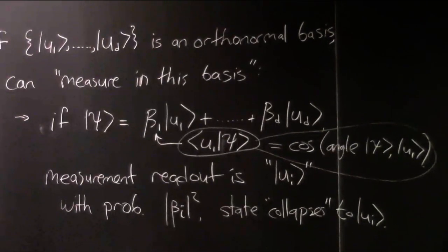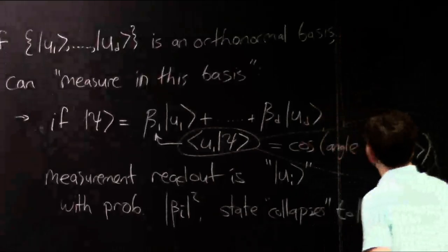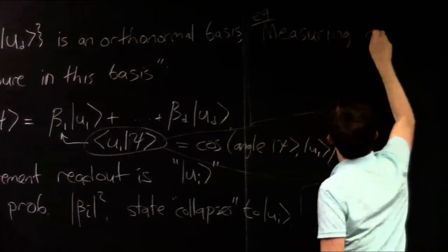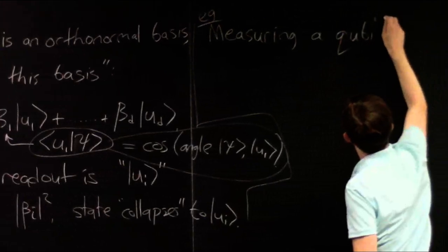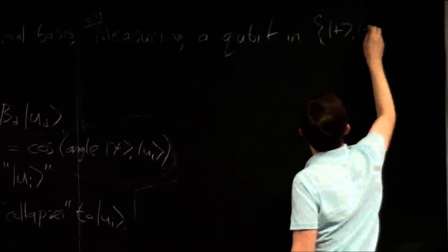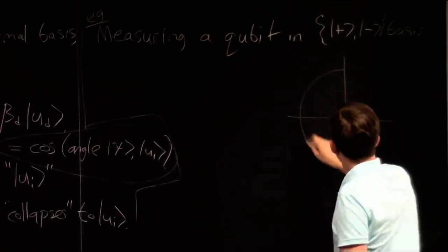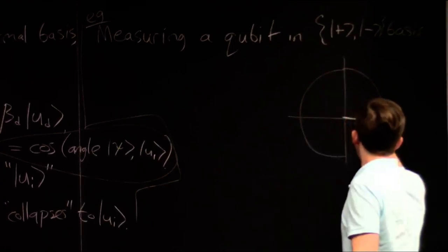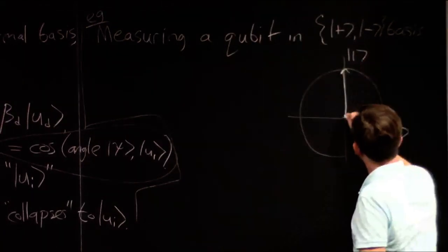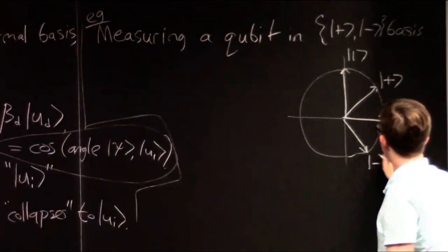Let's do an example. The simplest example is qubits. Our favorite example of an orthonormal basis which is not the standard one — 0 and 1 — is the plus or minus basis. This is a two-dimensional plane. The vector (1,0) is what we call 0; the vector (0,1) is what we call 1. The vector at 45 degrees is what we call plus, and the vector at minus 45 degrees is what we call minus. Plus and minus form an orthonormal basis, so you can build a device which measures in that basis.